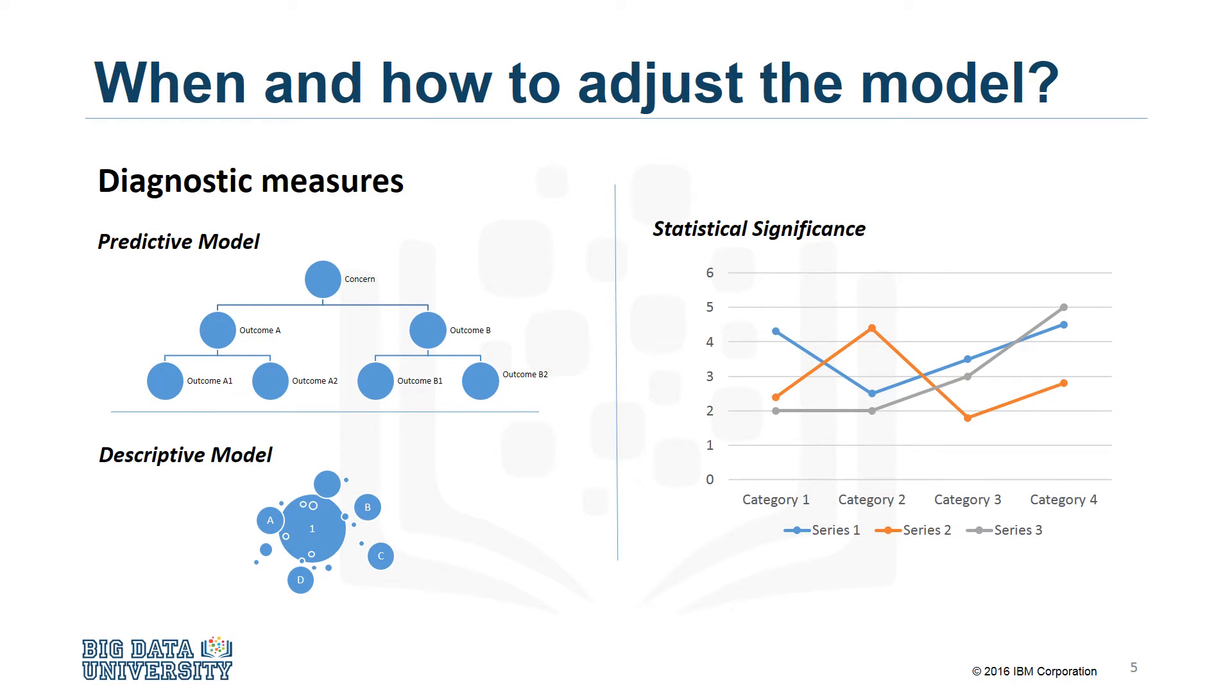Model evaluation can have two main phases. The first is the diagnostic measures phase, which is used to ensure the model is working as intended. If the model is a predictive model, a decision tree can be used to evaluate if the answer the model can output is aligned to the initial design. It can be used to see where there are areas that require adjustments.